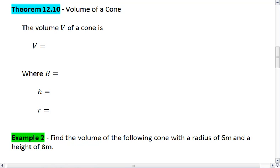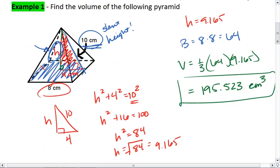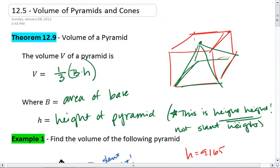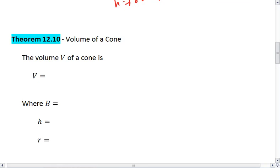Theorem 12.10 is the volume of a cone. Notice above how when we found the volume of a pyramid, it was one-third the volume of the corresponding prism. We see something similar to the volume of a cone.